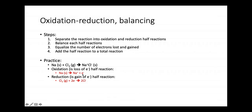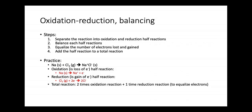Now I have my two half reactions. In the oxidation half reaction I have 1 electron, in the reduction half reaction I have 2 electrons. To get the final total reaction, multiply the oxidation reaction by 2 and the reduction reaction by 1 to equalize the electrons. Then 2 electrons on each side cancel out, giving the final balanced reaction: 2Na + Cl2 → 2NaCl.